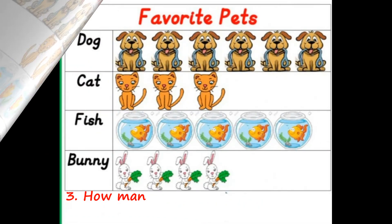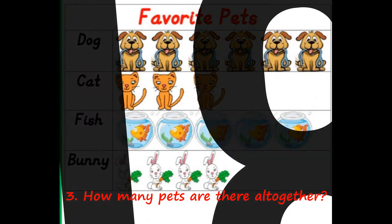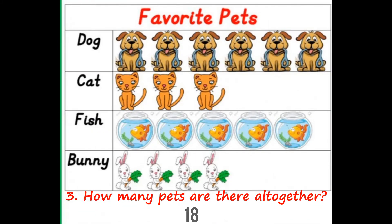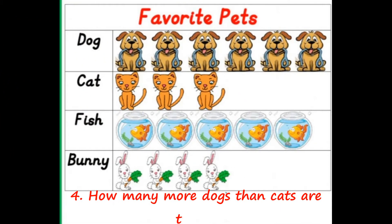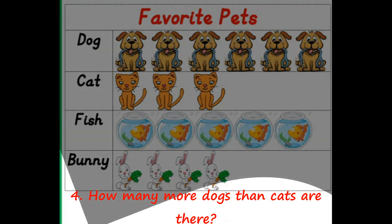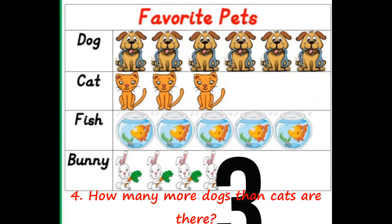How many pets are there altogether? Eighteen. How many more dogs than cats are there? Three.